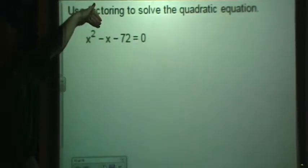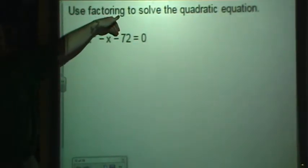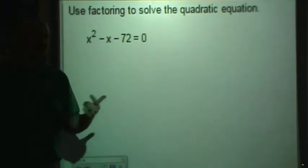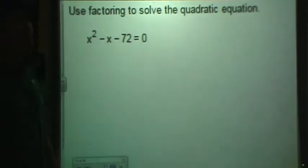Descending in degree. Squared, x to the first, and then a constant. Technically x to the zero power because anything to the zero power is one.